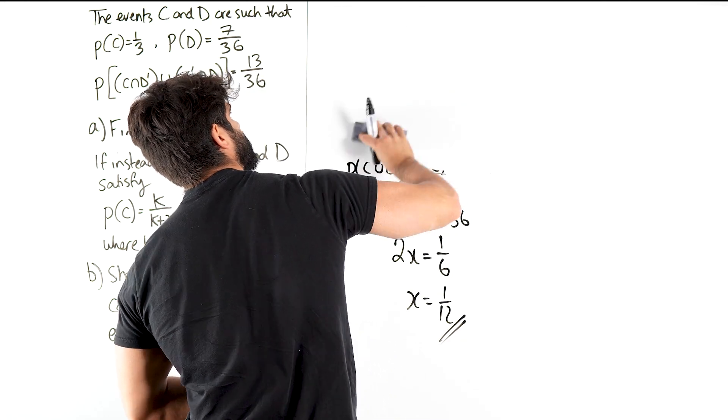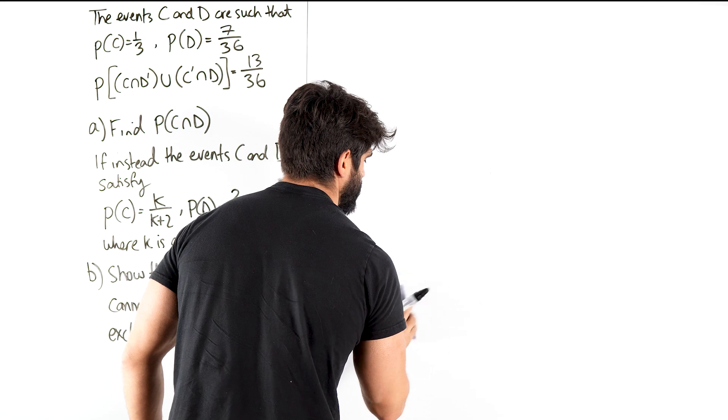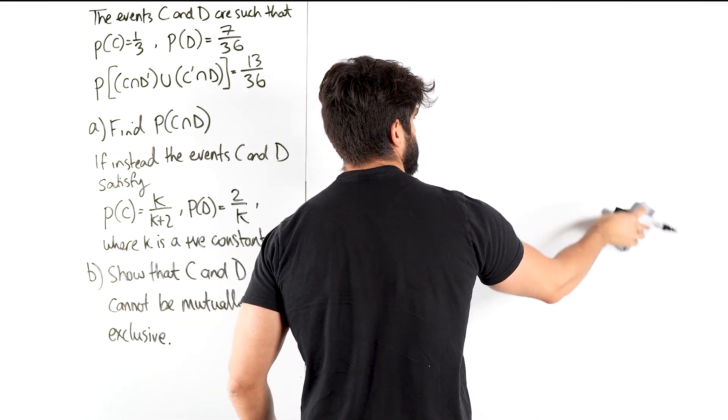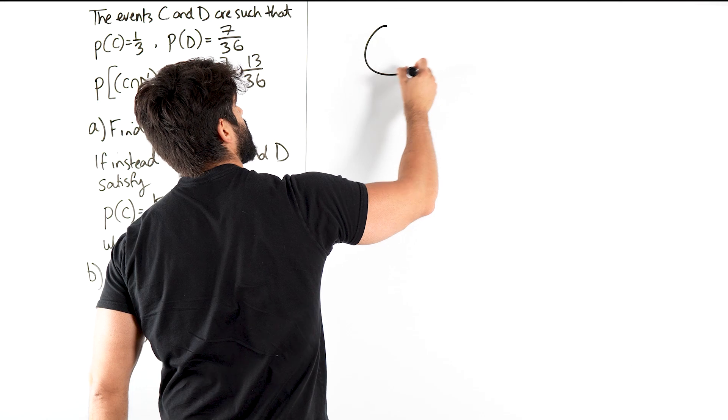So to answer this, we just need to think, what does it mean to be mutually exclusive? Mutual exclusivity in terms of Venn diagrams means that there's no overlap. There's no overlap here.